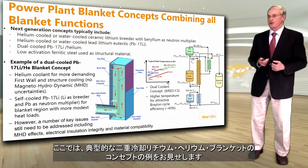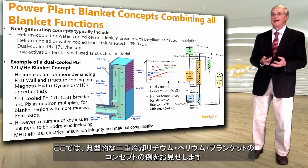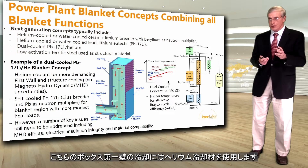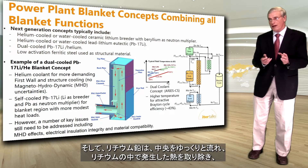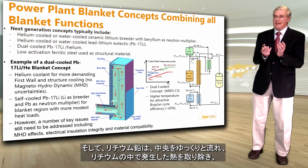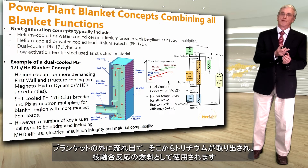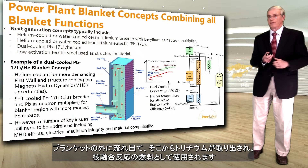Here I show an example of a typical dual-cool lead-lithium helium blanket concept, where the helium coolant is used to cool the box and the first wall, and the lead-lithium then flows slowly in the middle, removes the heat generated inside the lead-lithium itself, flows out of the blanket, and the tritium can be removed from it and used as fuel for the reaction.